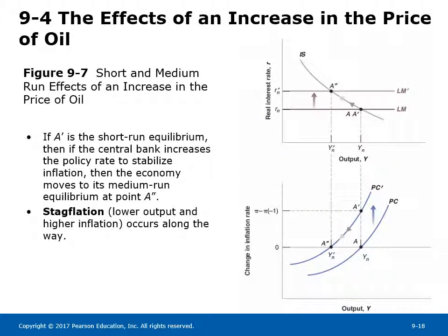Figure 9-7 shows the short and medium run effects of an increase in the price of oil. The Phillips curve shifts upward and change in inflation becomes positive. The Fed raises rates to curb inflationary pressures, shifting the LM curve up. The economy moves from point A to A prime in the short run, and to A double prime in the medium run. The natural rate of interest is higher and the potential level of output is lower in the medium run. The economy suffers from stagflation — lower output and higher inflation along the way.